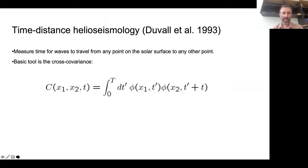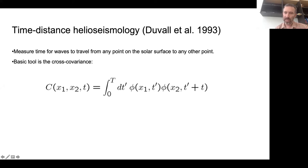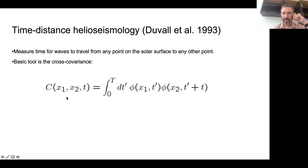Time-distance helioseismology: the first paper was Tom Duval and colleagues in 1992. The idea is that we're going to measure the time it takes waves to travel from any point on the solar surface to any other point. The basic tool in this data analysis is the cross-covariance, this function C. It depends on two points on the solar surface, X1 and X2, and a time lag T.